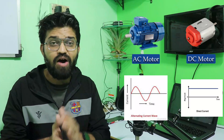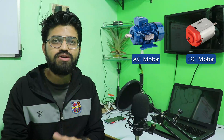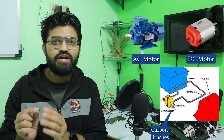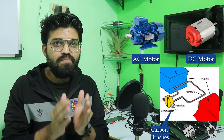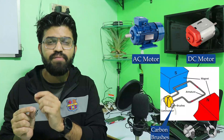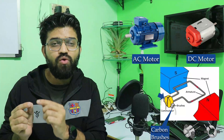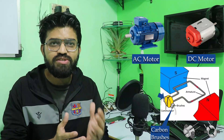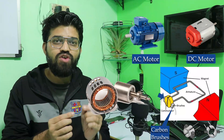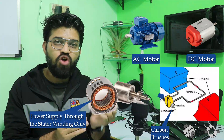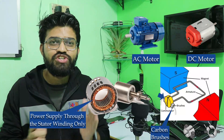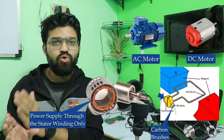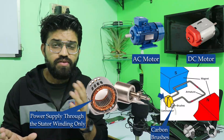Looking at the constructional features, DC motors are equipped with carbon brushes along with commutator rings. The commutator rings are on the rotor and the carbon brushes are connected to them, so current flows through the carbon brushes into the commutator ring and ultimately into the windings. In the AC motor, the construction is much simpler — power supply goes through the stator windings, not from the rotor, so fewer contact parts are used in the AC motor compared to the DC motor.